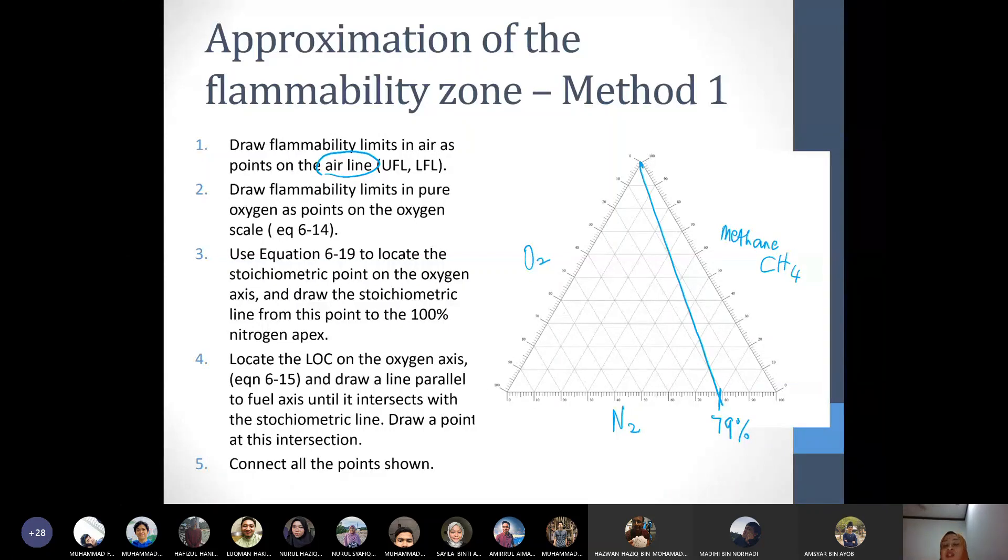Now we have to locate the UFL and LFL. So the UFL for methane is 15 percent. The LFL is 5 percent. The length of this airline is 9 cm, so I have to calculate 5 percent out of 9.